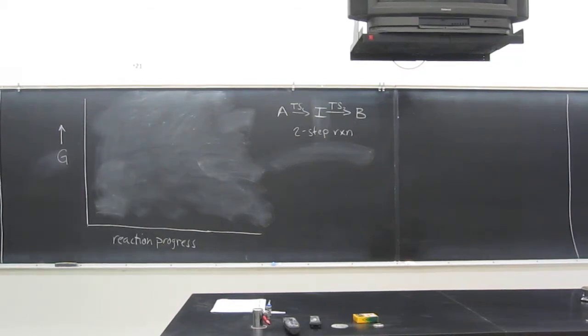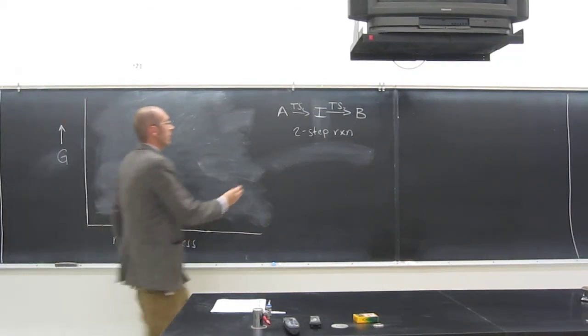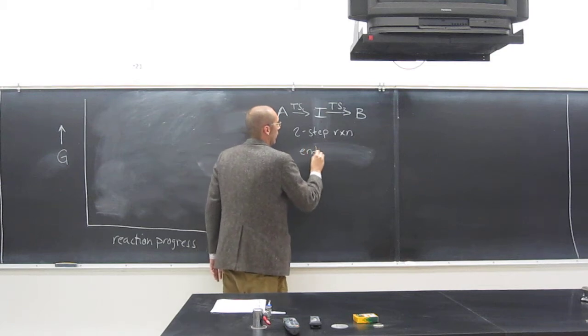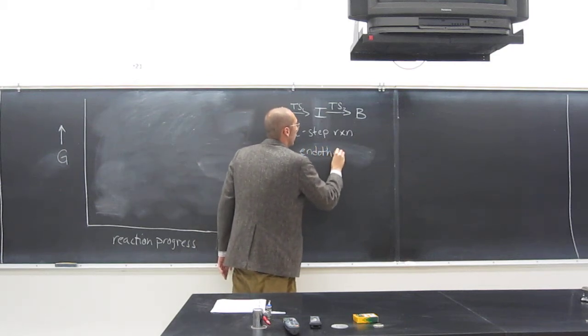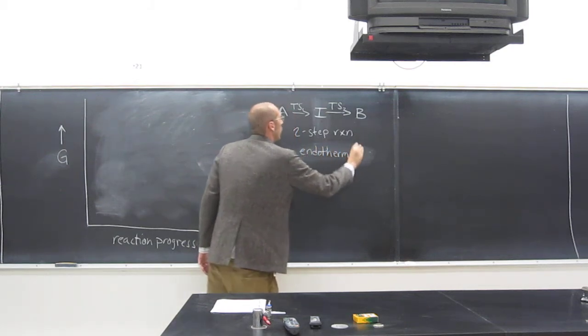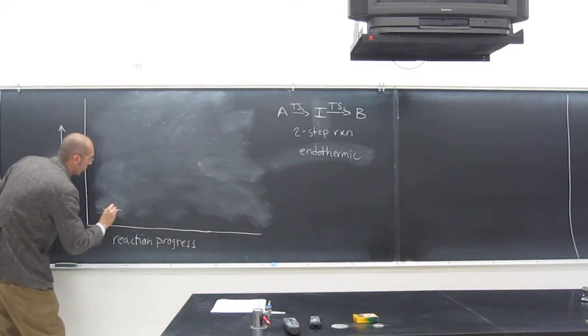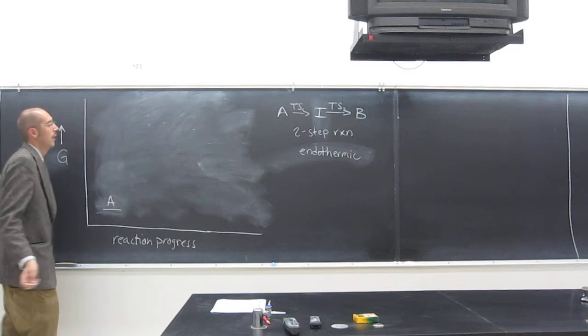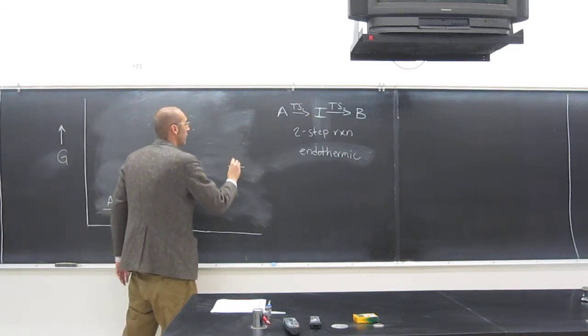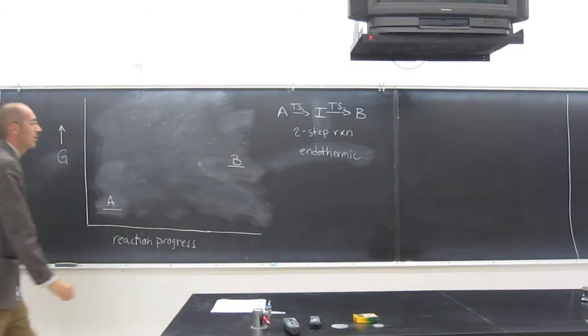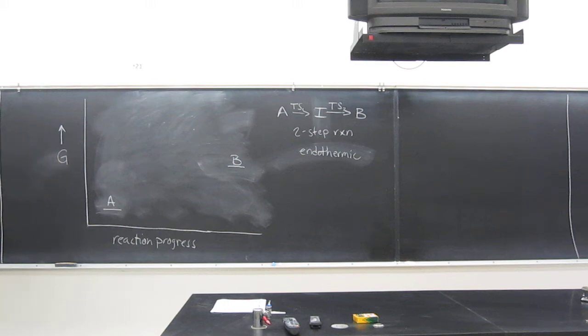Okay, so this time we'll do an endothermic two-step reaction. So that means that the reactants will be very low and the products will be higher than the reactants. Two steps means two humps, right?